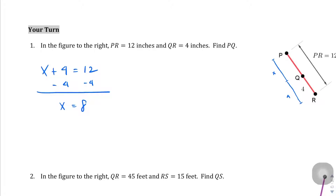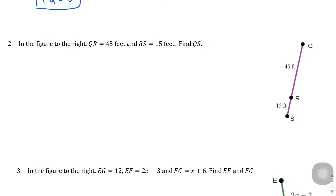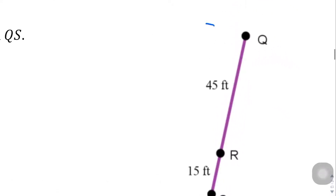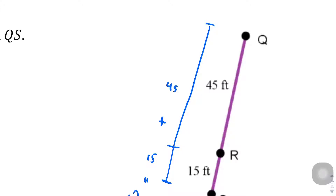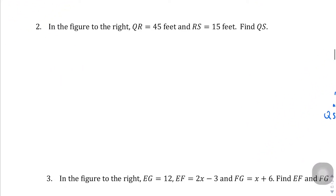Continuing on with question number 2. In the figure to the right, QR equals 45 and RS equals 15. Find QS. Again, segment addition postulate — we know the two parts and want the full length. So 45 plus 15 should equal the whole, which is QS. Bust out your calculators: 45 plus 15 equals QS, so 60 equals QS.